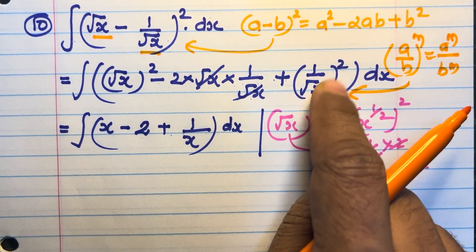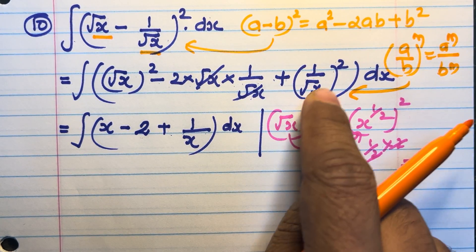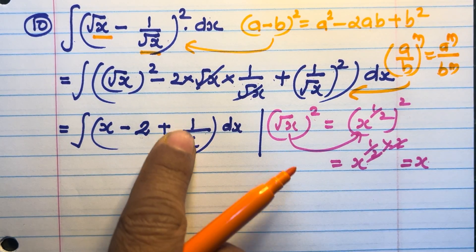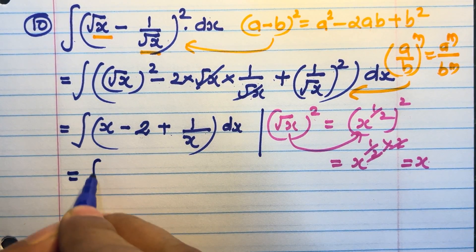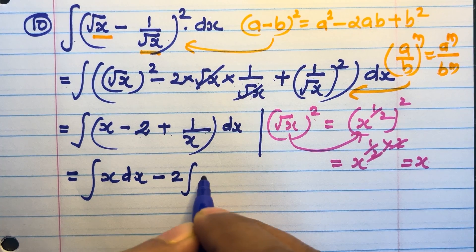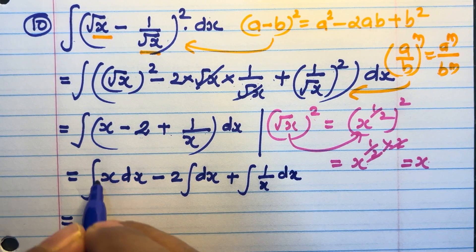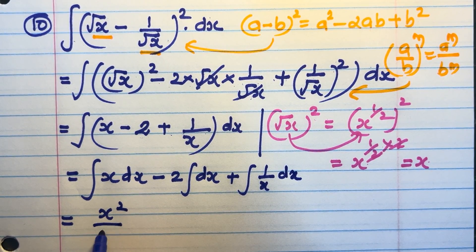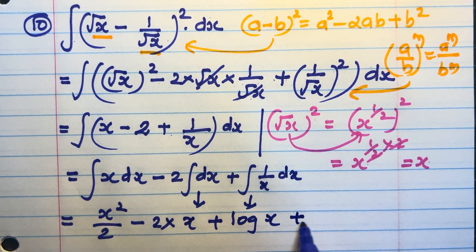The value of (1/√x)² is 1/(√x)² = 1/x. Now take the integration: integral x dx − 2 integral dx + integral (1/x) dx. That equals x²/2 − 2x + log x + c.